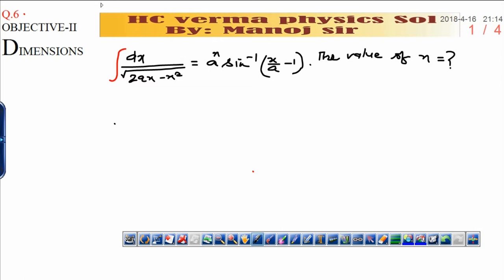In this MCQ, the question is given as integration of dx upon 2ax minus x square is equal to a raised to power n sine inverse x upon a minus 1. Find the value of n. You have to use the concept of dimension.